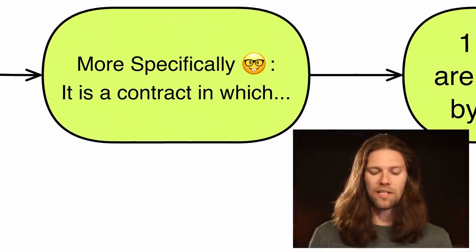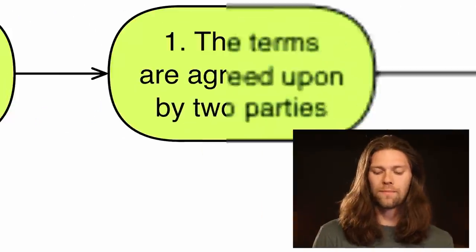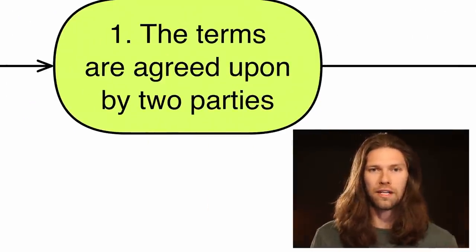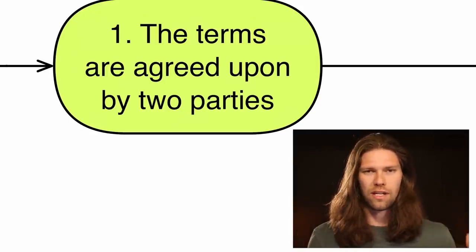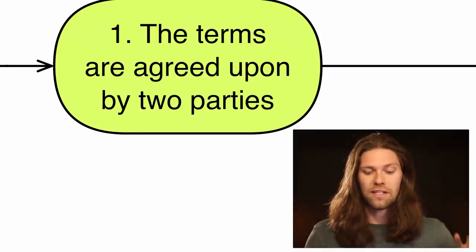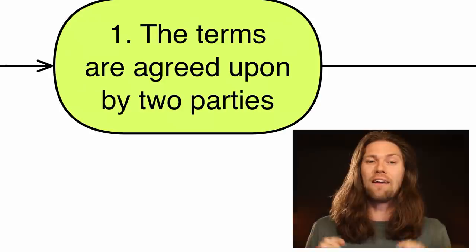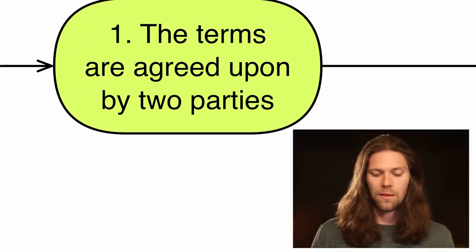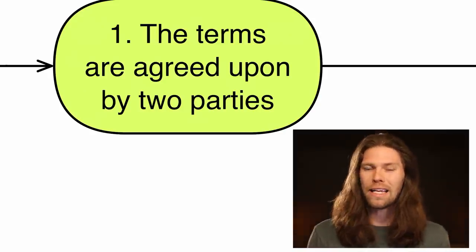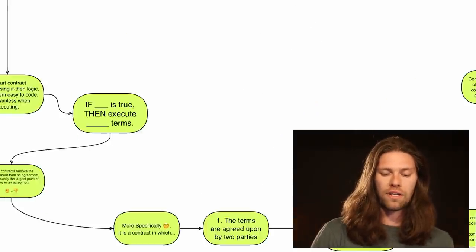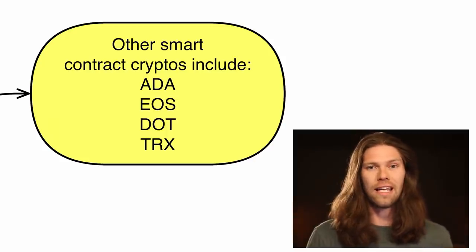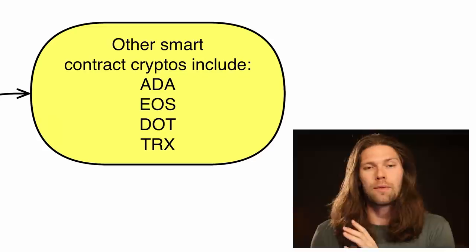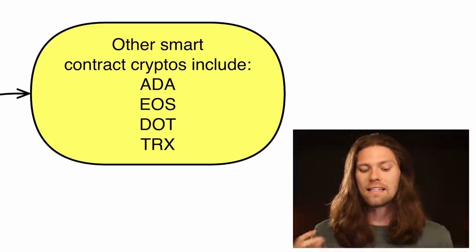More specifically, going through the steps: first, the terms are agreed upon by two parties. The agreement is written in code and distributed on a blockchain network. It does not require a third party to manage the contract or keep anyone honest — it is a trustless system. The entire blockchain is an immutable ledger, meaning you can't change it, and it is publicly verifiable.